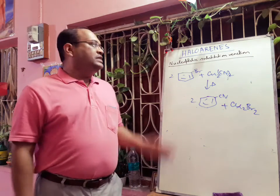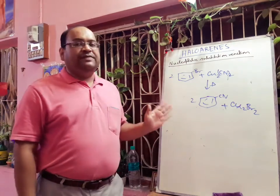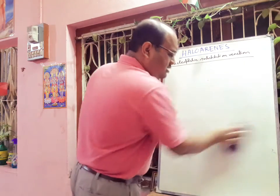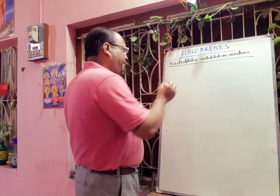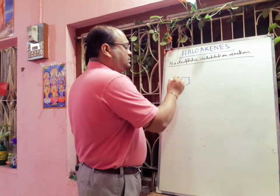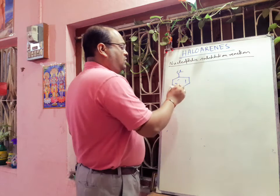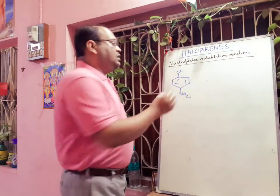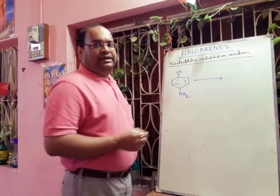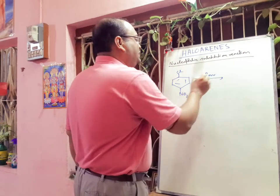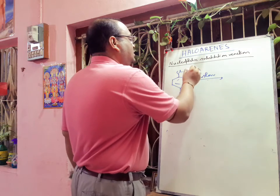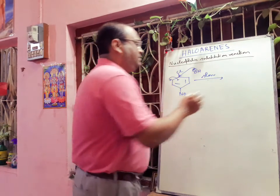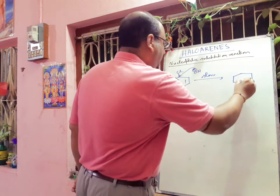Now we will discuss the mechanism of this type of ipso-substitution reaction. Taking para-nitrochlorobenzene, the first step is the slowest or rate-determining step. Here, the hydroxide ion (OH⁻) attacks the carbon bearing the chlorine, forming a negative charge on that carbon atom.